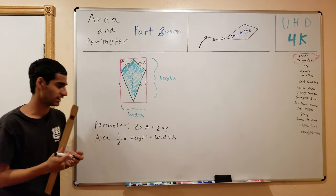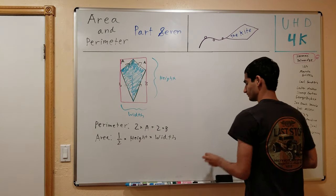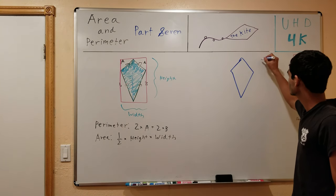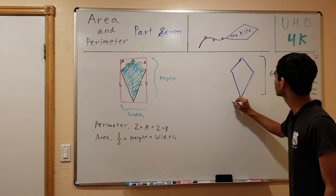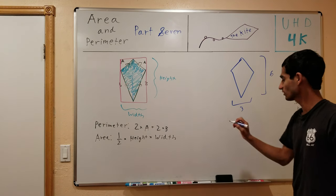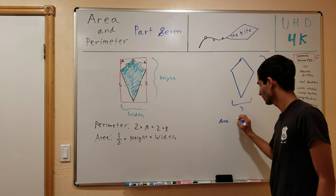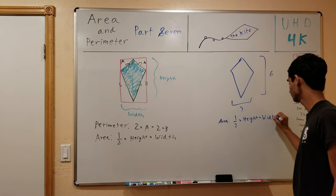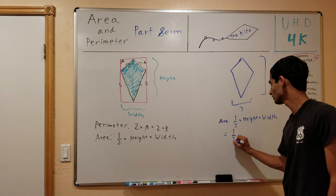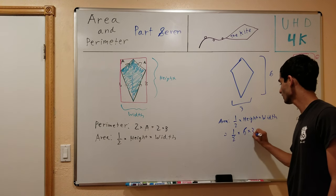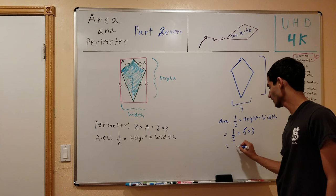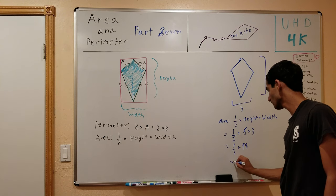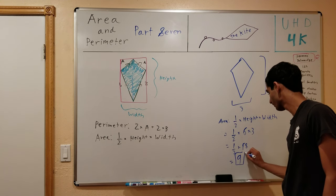Let's do a quick practice problem. This over here is a simple kite: the height is 6 and the width is 3. So area equals one half times height times width, which equals one half times 6 times 3, which equals one half times 18, which equals 9.